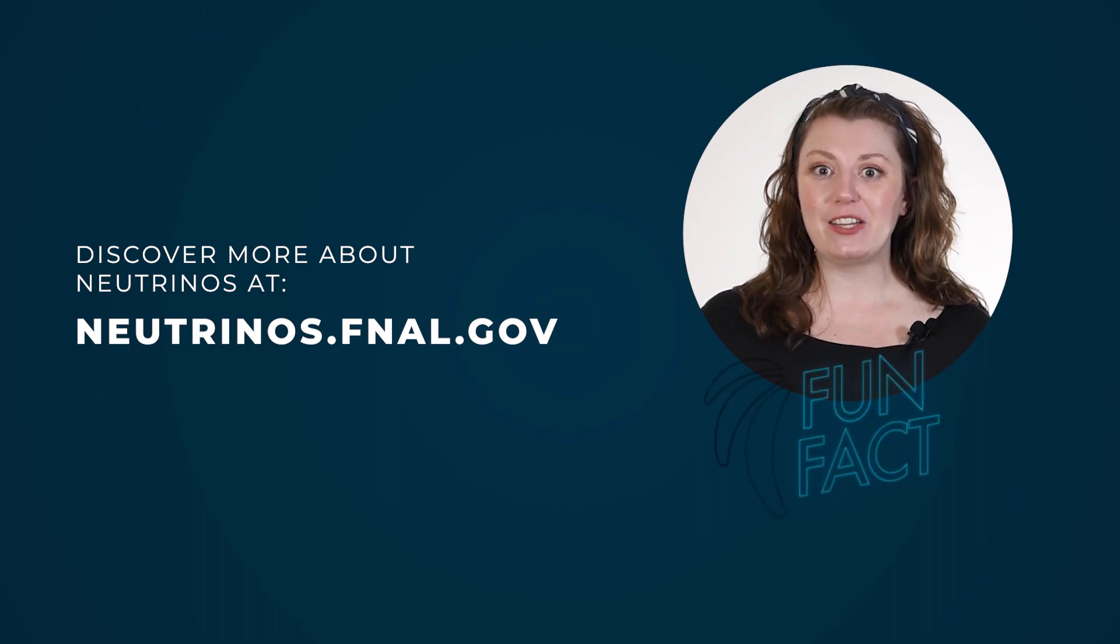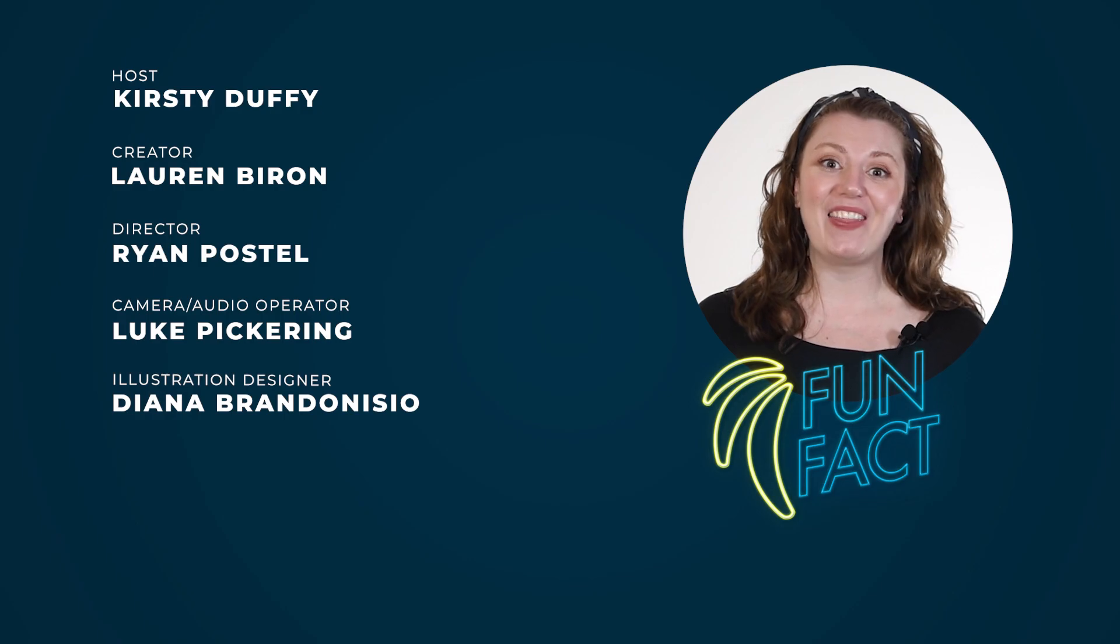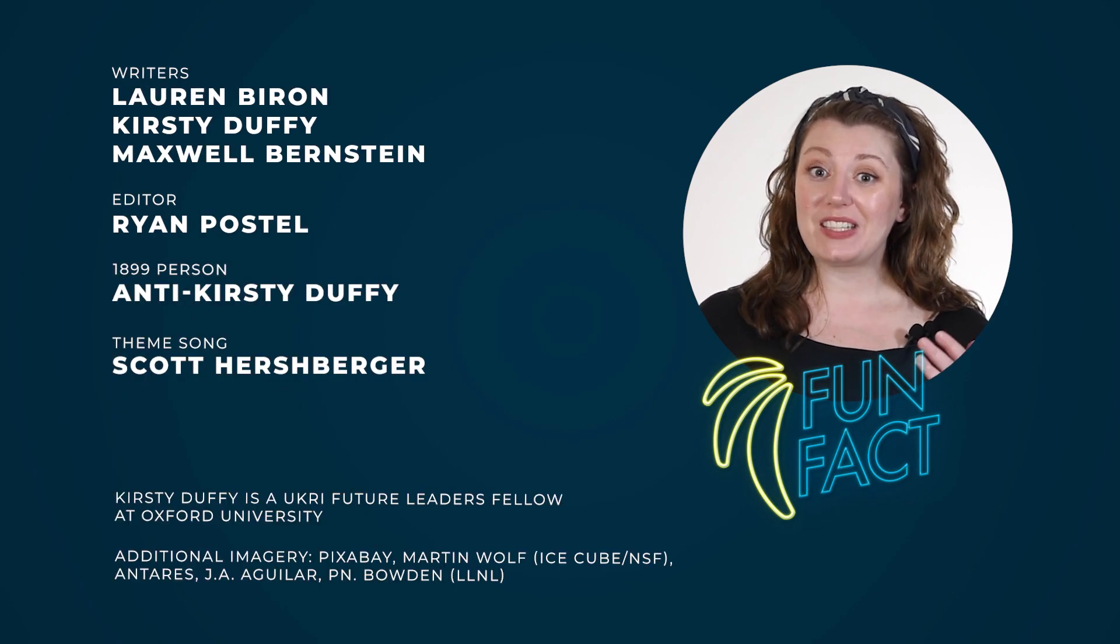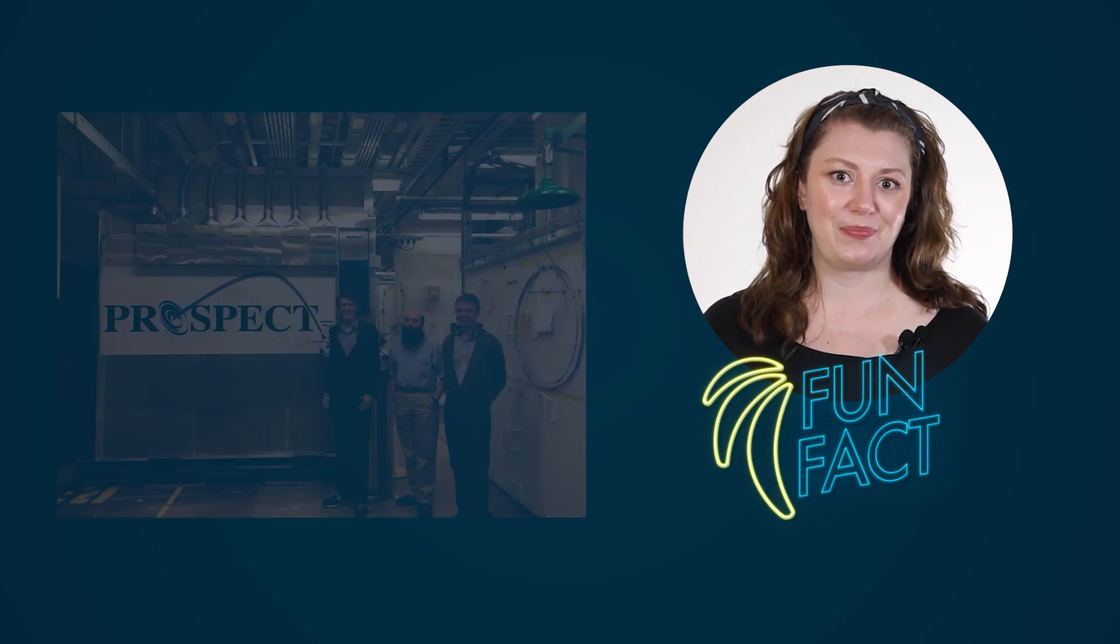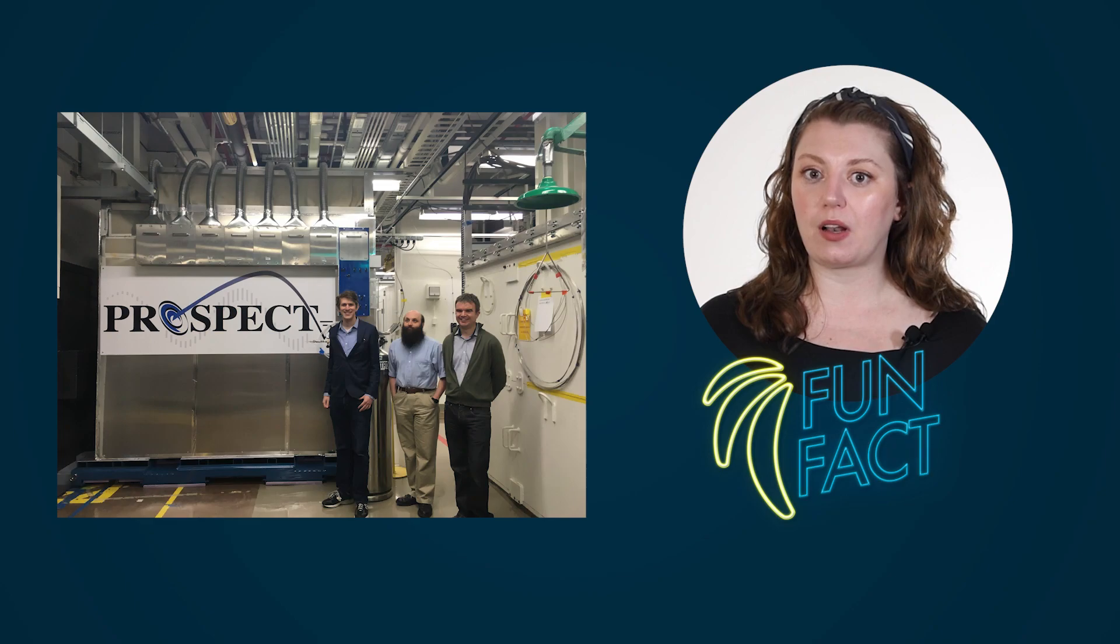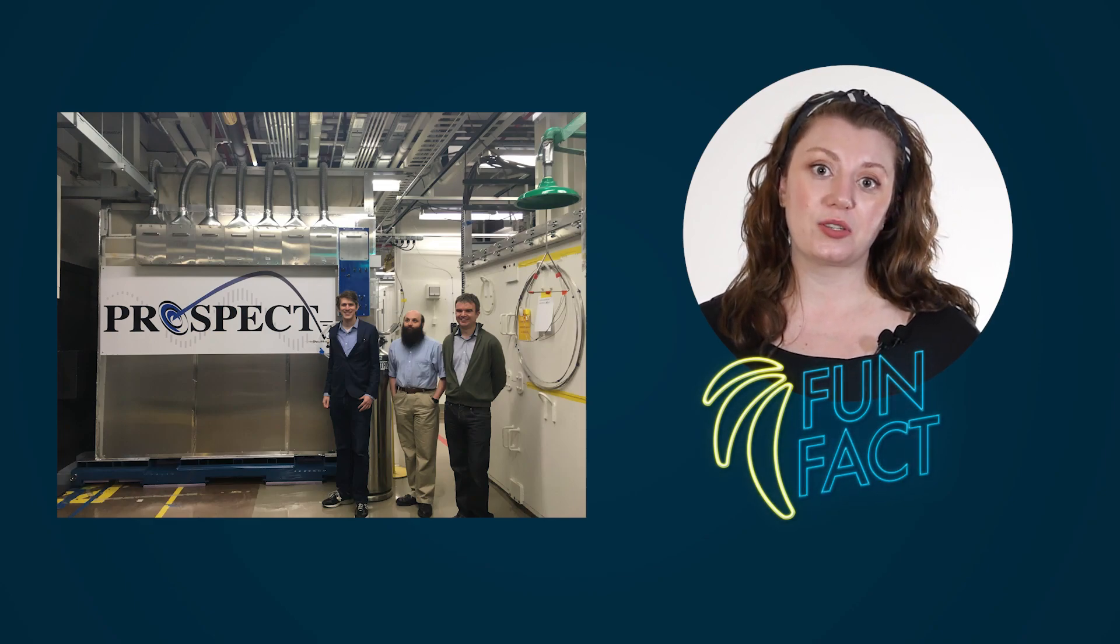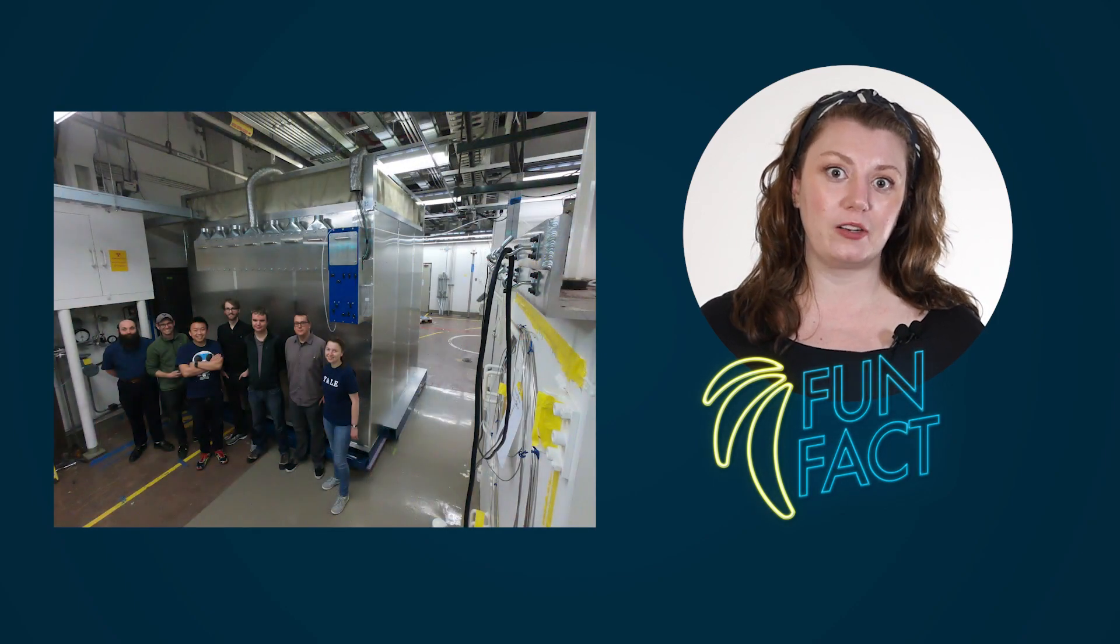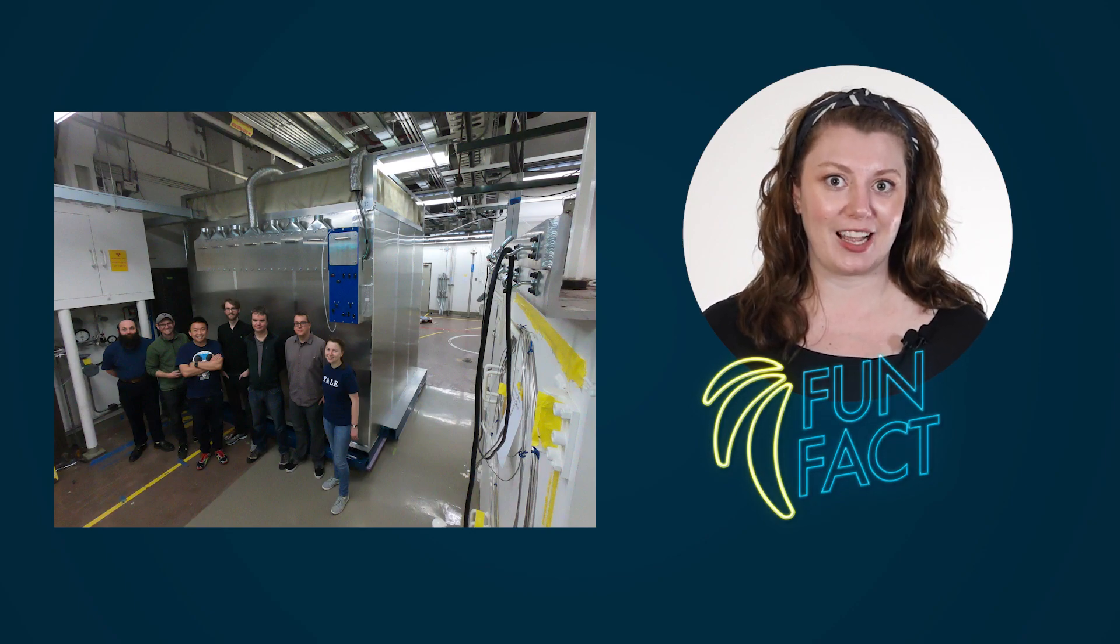Fun fact! Many neutrino detectors built for physics research are really big, and they're often underground to shield them from muons in the atmosphere. But some of the detectors being developed for nuclear reactor monitoring are a bit different. These detectors need to get up close to the reactor and move between different sites. Researchers on experiments like Prospect have recently shown success, making above-ground mobile neutrino detectors that can accurately measure neutrinos at commercial reactors.